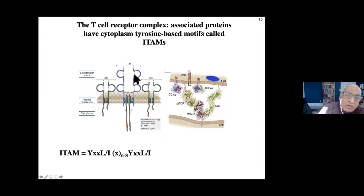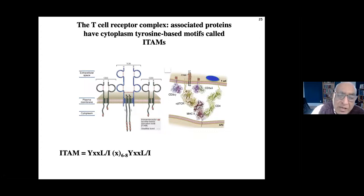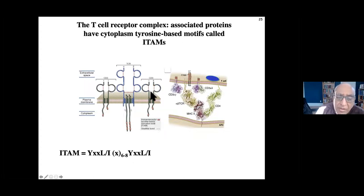The key thing about the T cell receptor is that it's a modular receptor with 10 ITAMs. Those 10 ITAMs give the capacity to signal through, say, eight ITAMs for strong signaling or two ITAMs for weaker signaling, and by this modularity of signaling you can have different fates for the T cell. The T cell receptor is made up of the alpha/beta recognition chains, the gamma-epsilon and delta-epsilon heterodimers each having one ITAM, and the zeta homodimer with three ITAMs each - totaling 10 ITAMs.